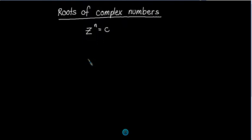We're looking at roots of complex numbers here, and we've got a cute little method that we're going to use which is going to use our De Moivre's theorem and polar form. But if we go back to the day, if we said to you let's have a go with z to the four equals one — what are the roots of this? What could you tell me?